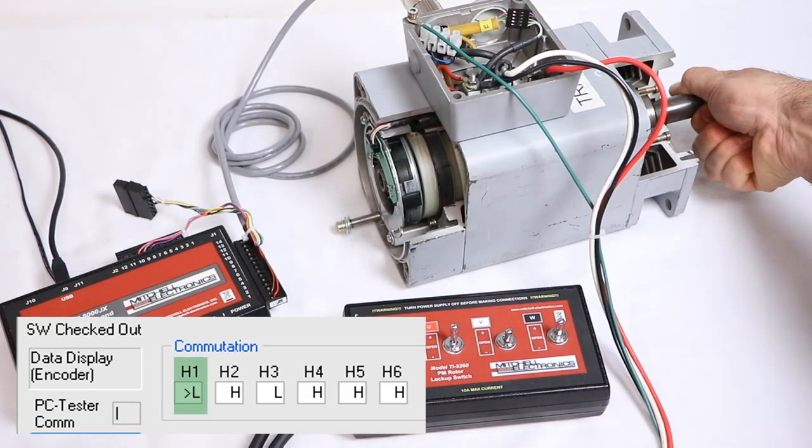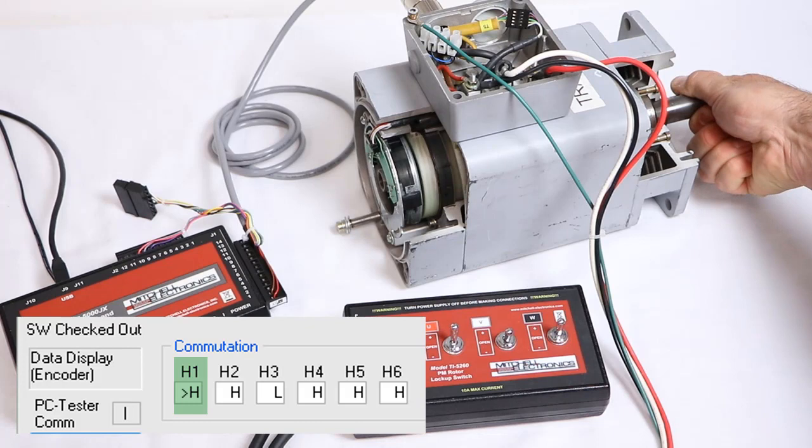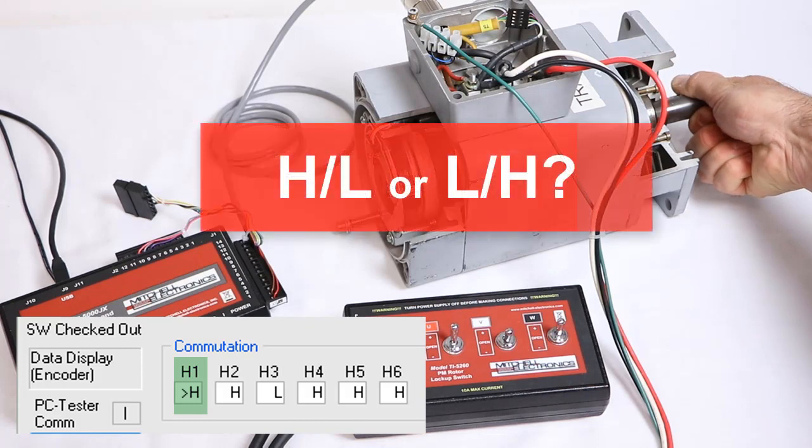We must record the correct direction of the toggling pulse either high to low or low to high, using the motor forward direction as our guide.